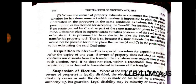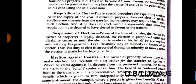Illustration: A transfers to B an estate owned by C, and as part of the same transaction gives to C a coal mine. C does not elect in express words, but takes possession of the coal mine and exhausts it. C is presumed to have elected to take the benefit and thereby transfers his property to B. This is so because if C now rejects the transaction, it will not be possible to place the parties A and C in the position they were in prior to C's exhausting the coal mine.